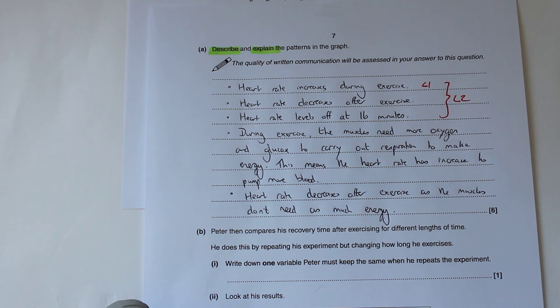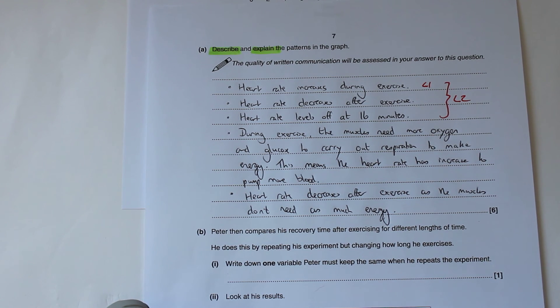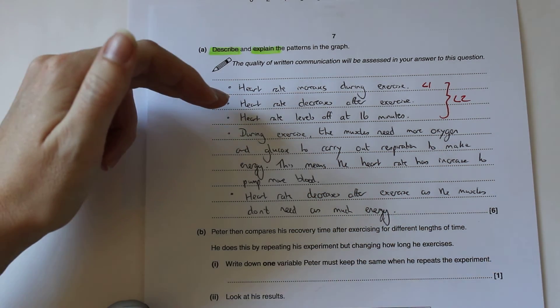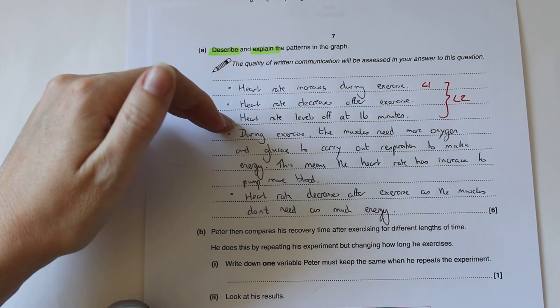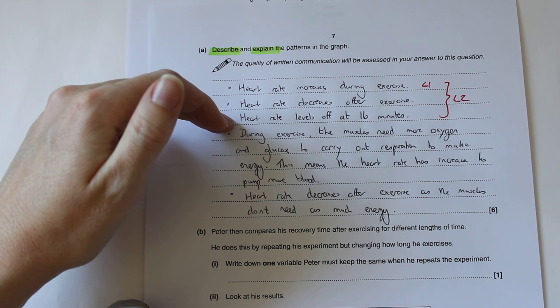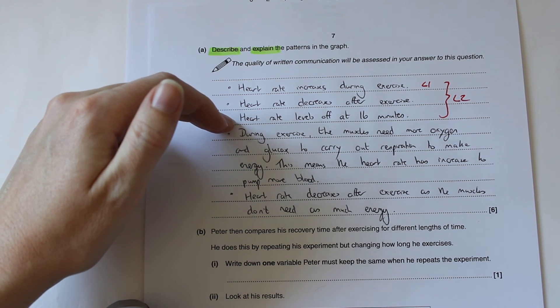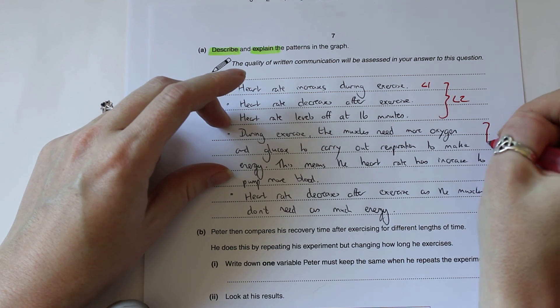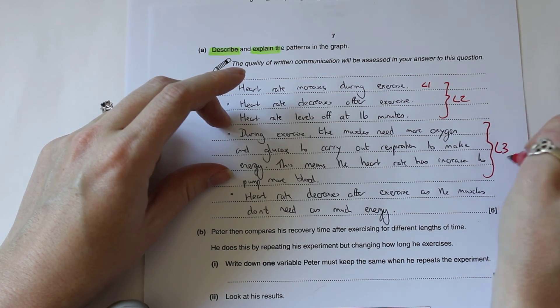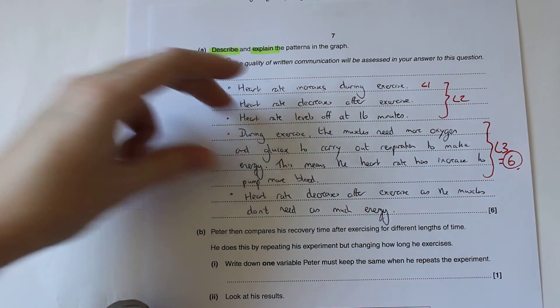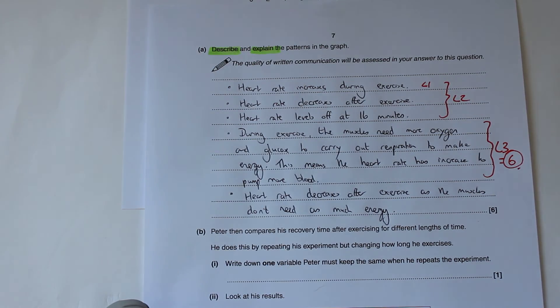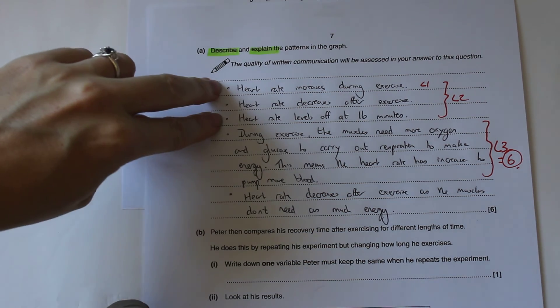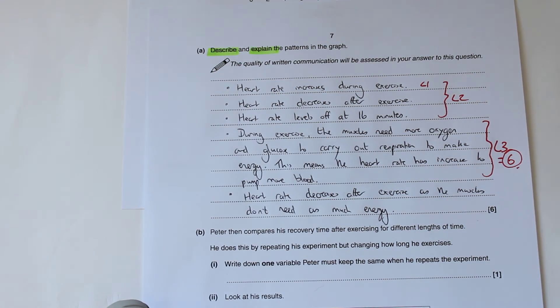Finally for the level three answer which gets us between five and six marks, we've got to identify the complete pattern—the increase, the decrease, the level off—and explain the reasons for the increase or the decrease. Because we've explained our increase here, that with the top section there gets us our level three, which is six marks. Obviously I also did the decrease there as well. Either one of those complete with the pattern at the top would get your top six marks.